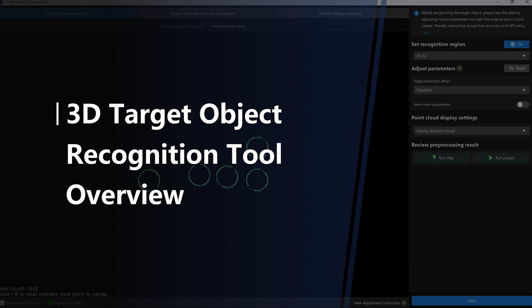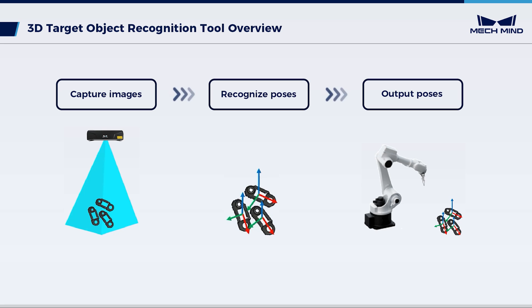This video will demonstrate how to use the 3D Target Object Recognition Tool. In 3D vision-guided robot locating, assembly and loading applications, after acquiring image data for target objects, the first important step is to recognize object poses.